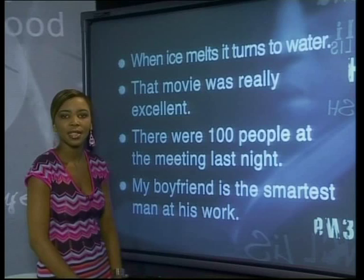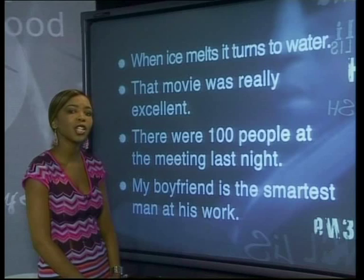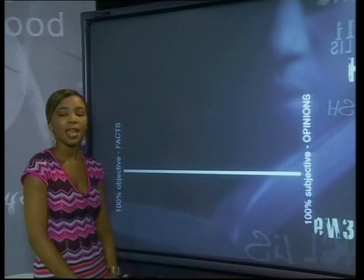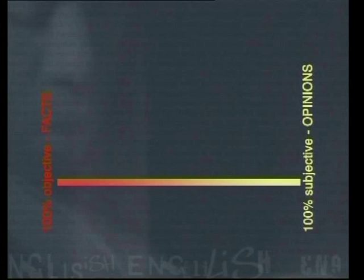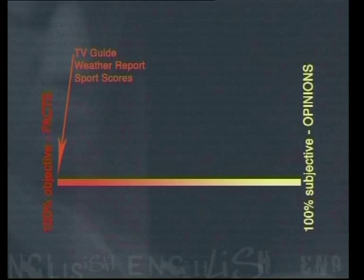The results on the sports pages — the team either won or lost — are based on fact. The weather for the day will be based on information from scientists at the weather stations. The timetable for TV programs is also objective. Don't forget this diagram because we'll discuss it in future lessons. But for now, it's time for today's task.